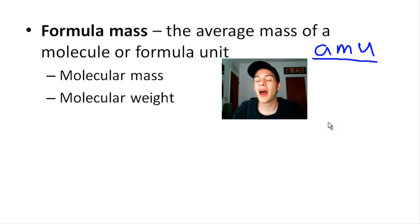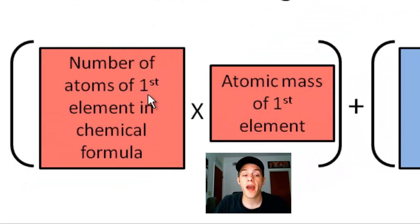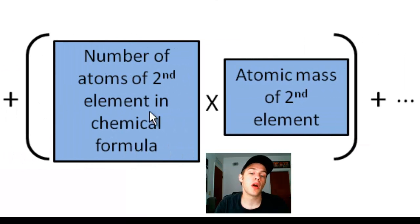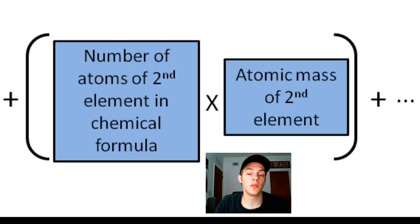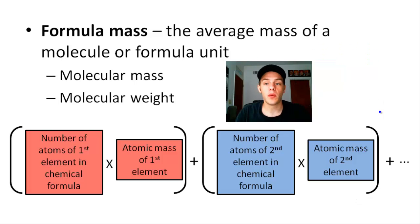To calculate the formula mass of any compound, you take the number of atoms of the first element in your chemical formula and multiply it by that element's atomic mass. Then you add that to the product of the number of atoms of the second element times its atomic mass. You keep going until you run out of elements in your chemical formula. With that in mind, let's do an example where we calculate the formula mass of a compound.